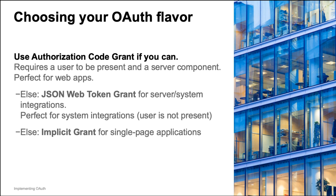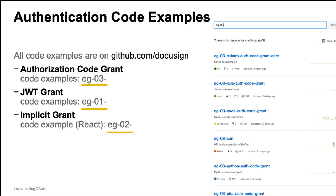For single-page web applications or mobile applications where the user is present, but there is no secure server component, use the Implicit Grant flow. We have code examples for multiple software languages for the different OAuth flows. They're available on GitHub and also discussed on the Dev Center.